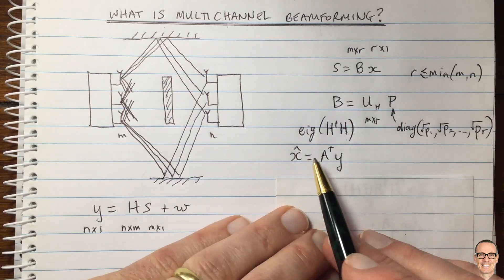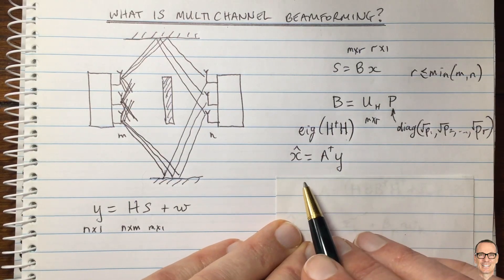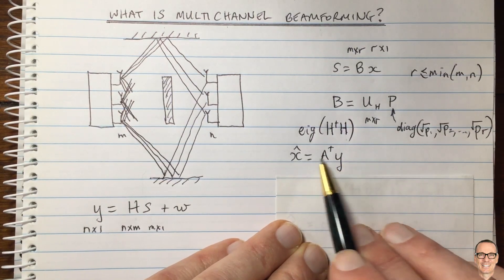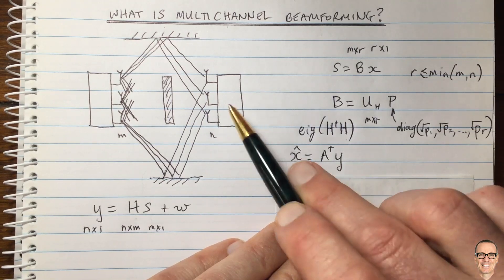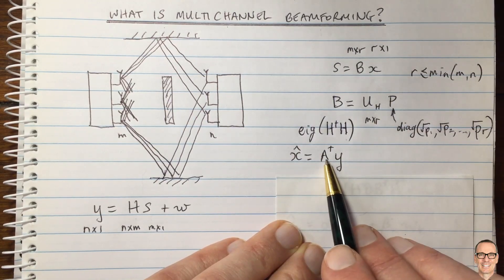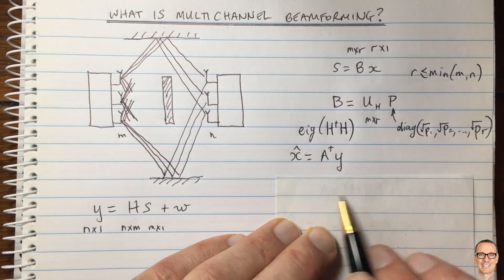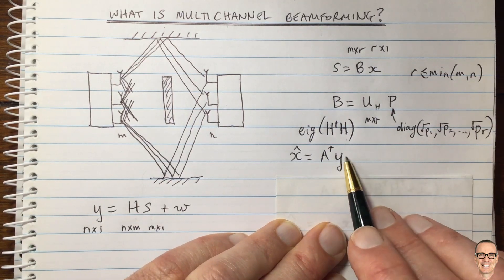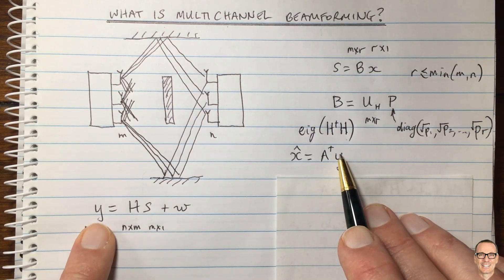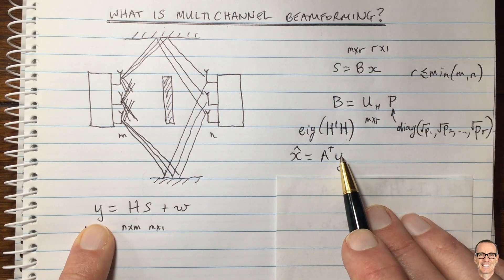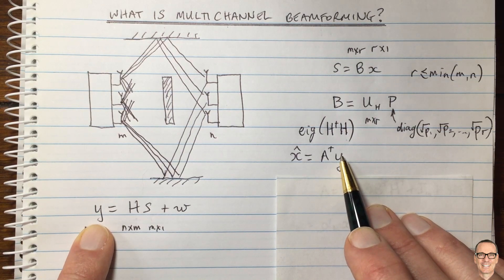Now at the receiver, what do we do? We can do a minimum mean squared error receiver operation at the receiver. So we multiply by this matrix A. We just call it A complex conjugate transpose because we're going to define A just here. But it's that multiplied by our receive vector y. So that's what we're going to do at the receiver, and this is effectively also beamforming at the receiver.